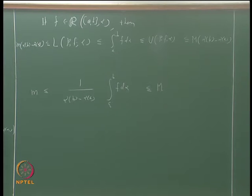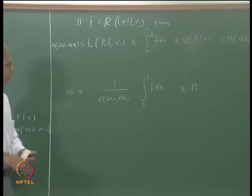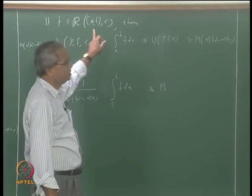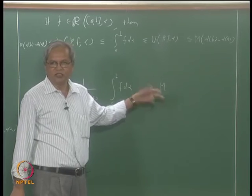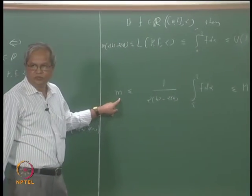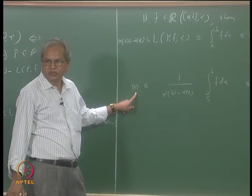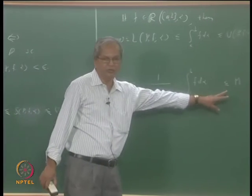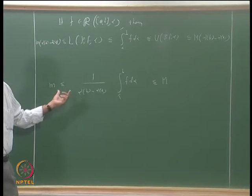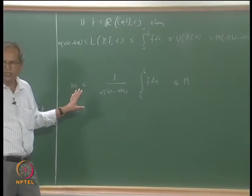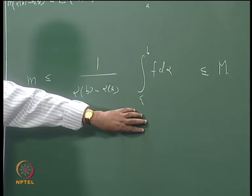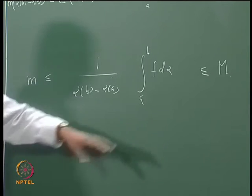If the function is continuous we can say something more. M is a supremum, and if f is continuous on the interval then this value is attained — there is some point x₁ such that f(x₁) = M. Similarly there is some point x₂ such that f(x₂) = m. Since f is continuous, by the Intermediate Value Theorem, f takes all values between m and M, so there must be some point at which f takes the value of the integral expression as well.